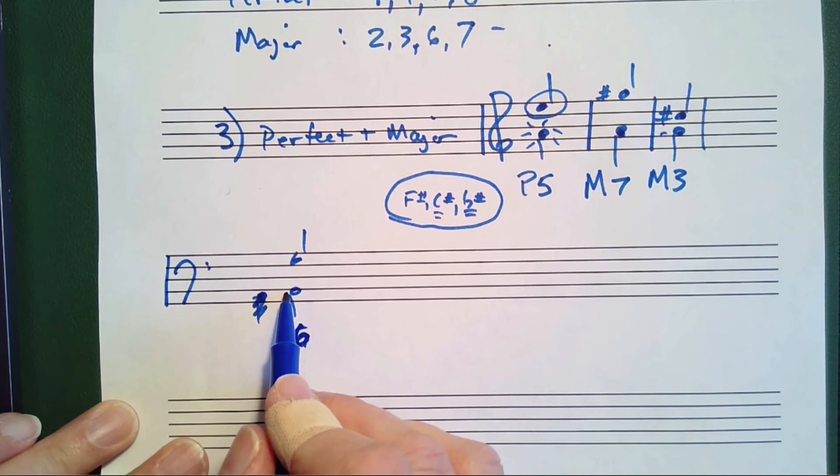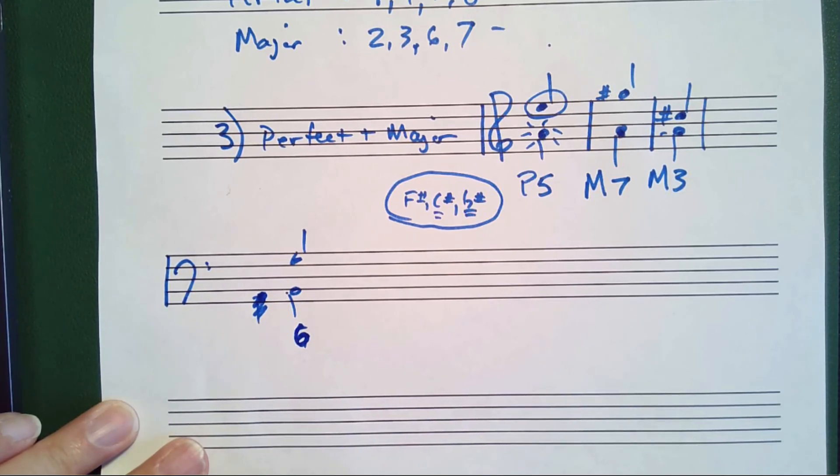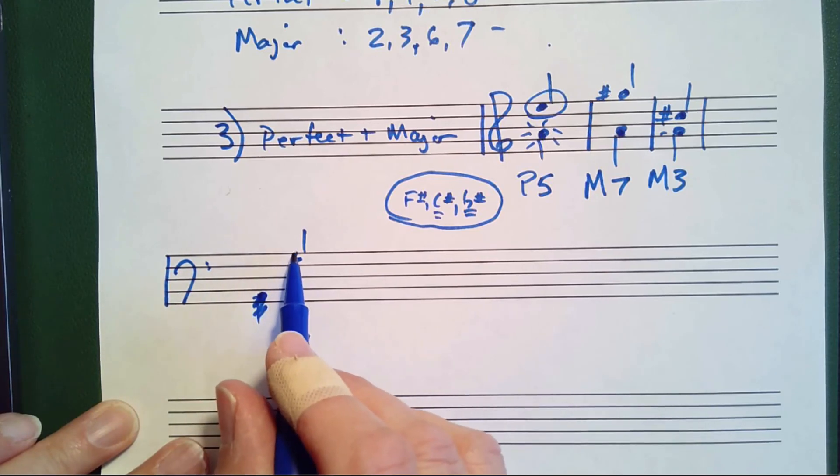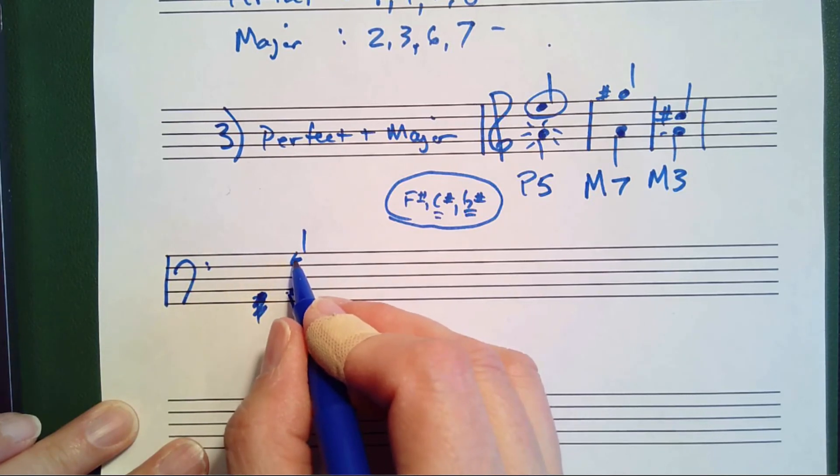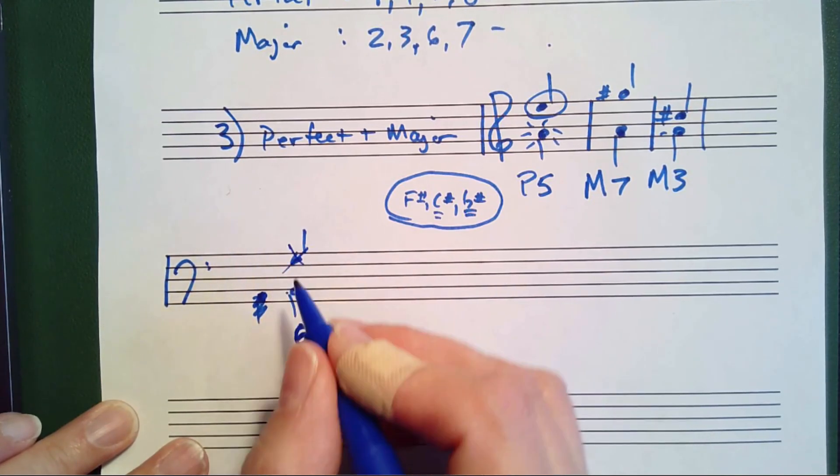And then if you think of the bottom note B, the key signature is F sharp, C sharp, G sharp, D sharp, A sharp. This note is not in the key signature here.